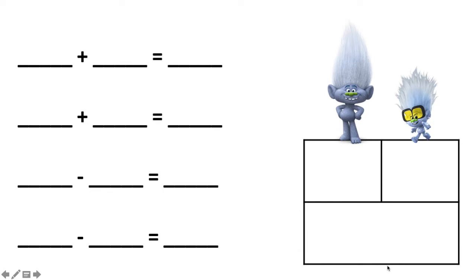You practice writing fact families with single digit numbers. For example, if the two parts are four and three, and the whole is seven. Today, we're going to take it one step further. We're going to write fact families with tens. And the idea is still the exact same.